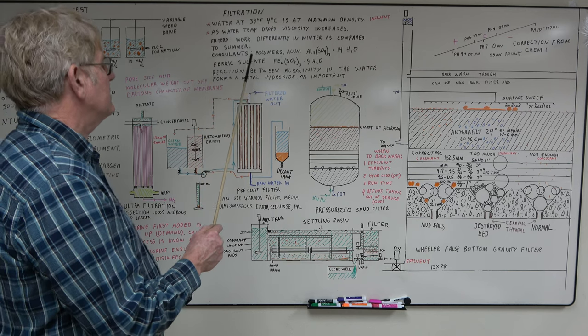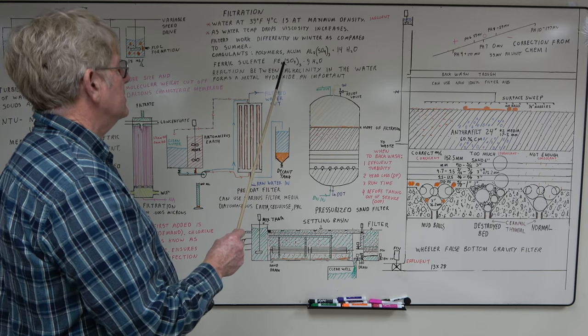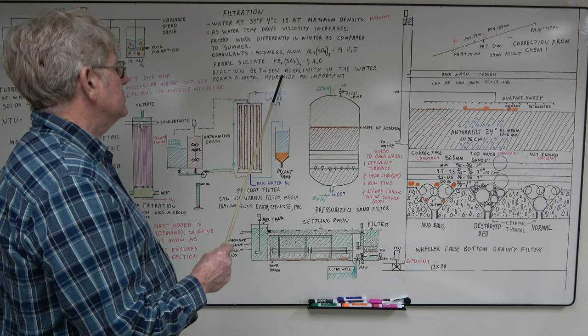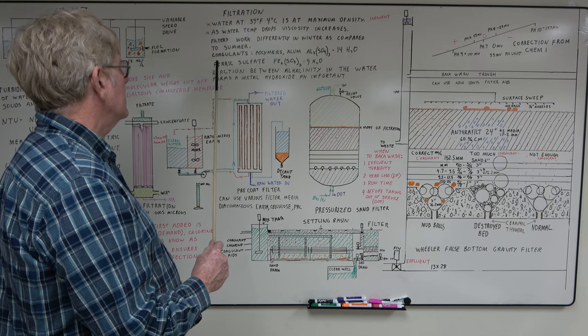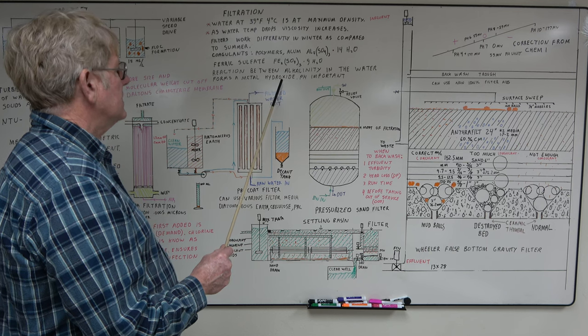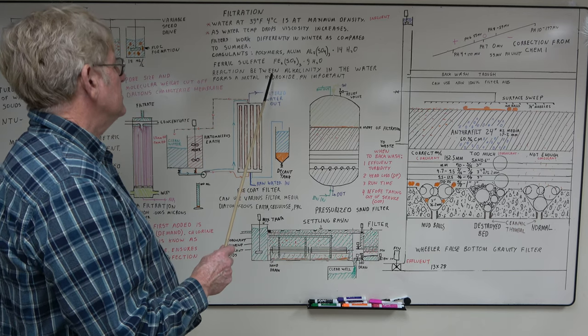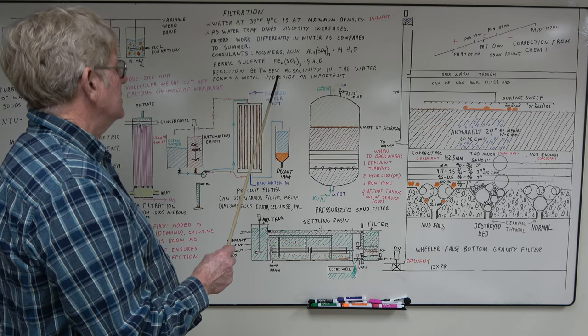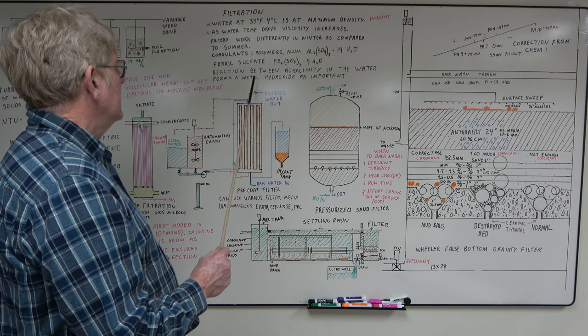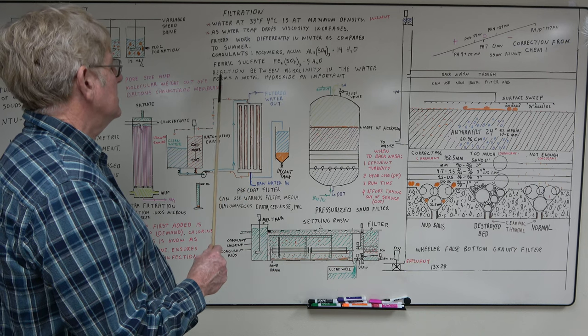Some of the coagulants used: they have synthetic polymers. Alum is the old standby, aluminum sulfate. Ferric sulfate works better in a little bit higher pH waters. The way the coagulants work: interaction between the alkalinity in the water and the coagulant forms a metal hydroxide. This creates a positive charge, and a lot of the suspended solids in the water are negative charge, so they'll stick together. They also will plate out on the particulate and make them stick together to form a floc. So the big thing with coagulants: they cause the suspended solids to stick together to form a floc which can be filtered better.